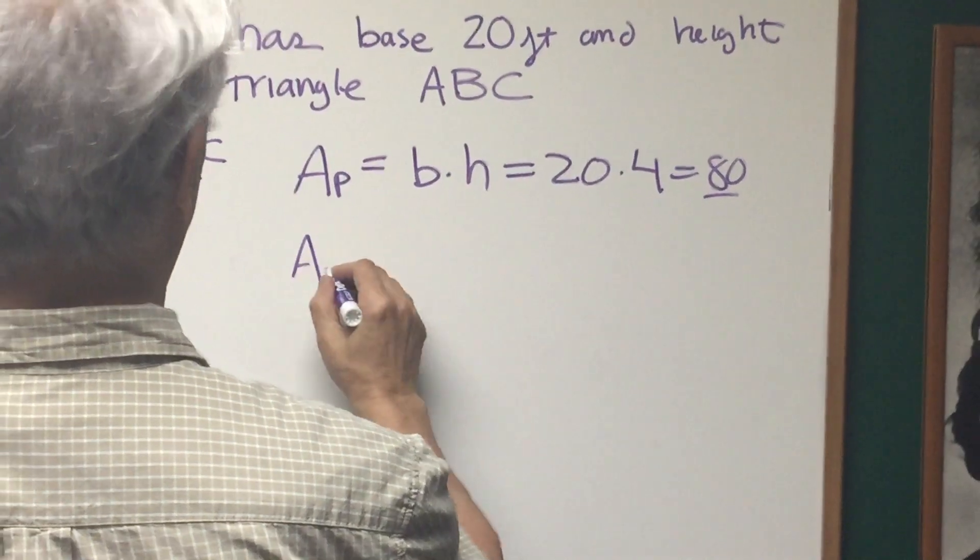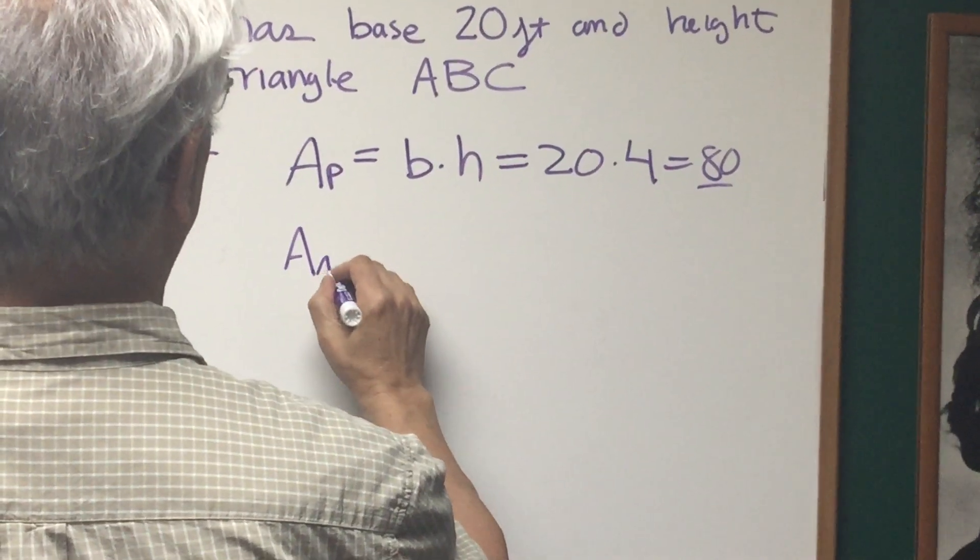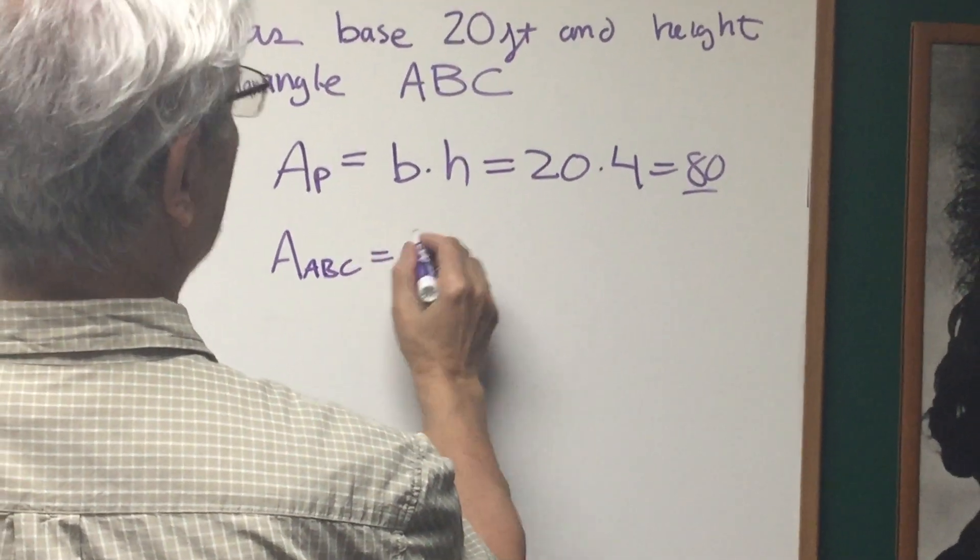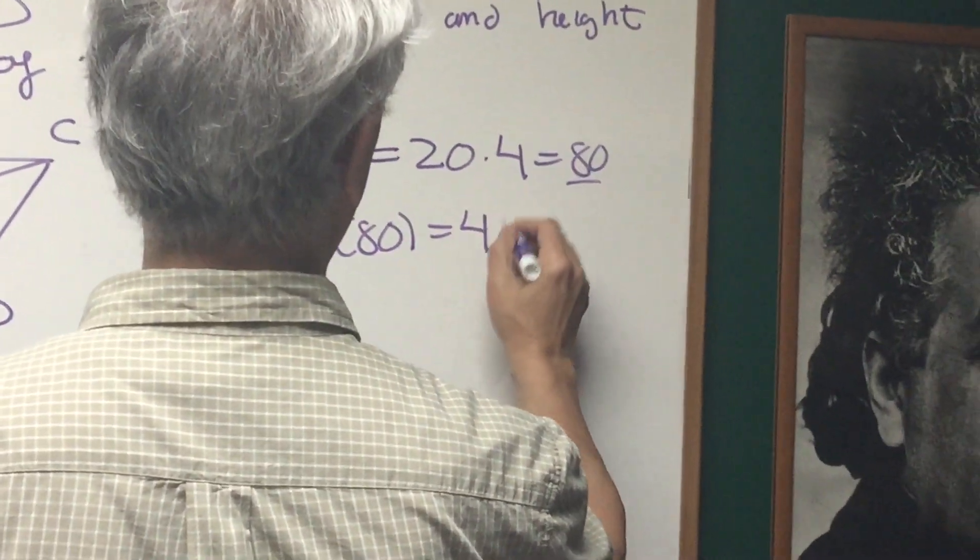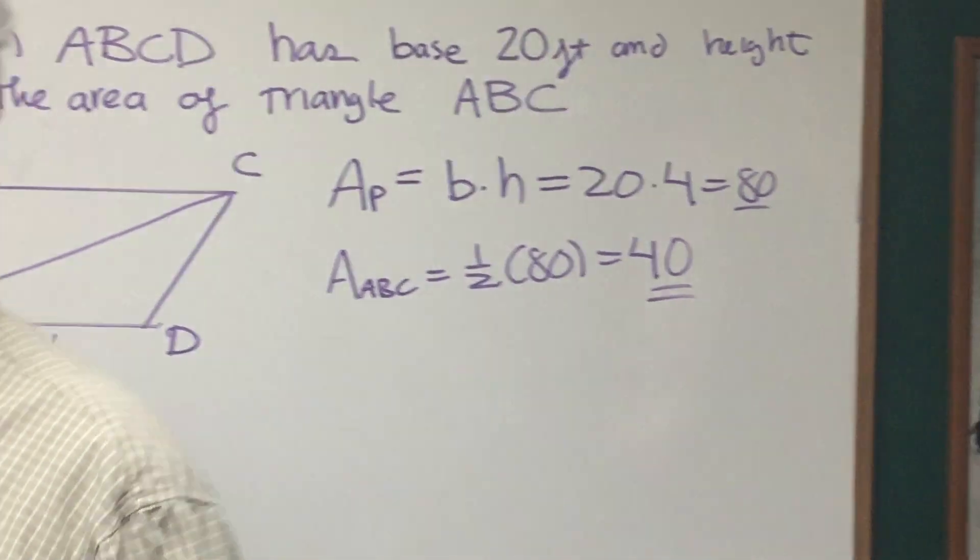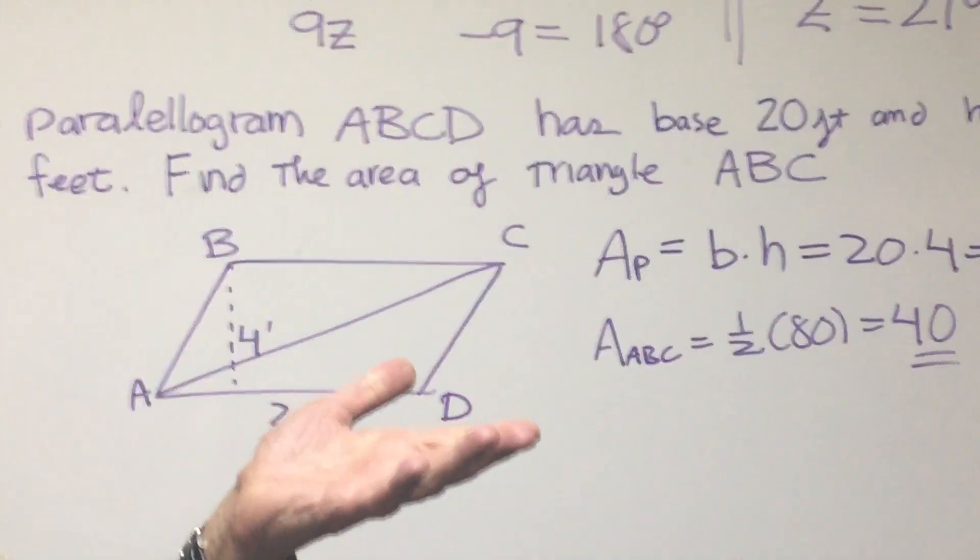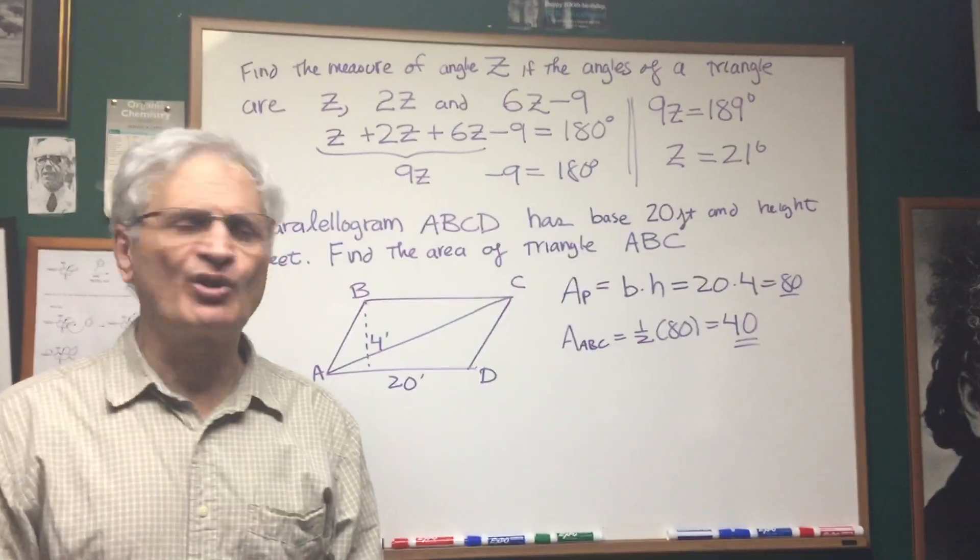And therefore the area of triangle ABCD is just going to be exactly half that, half of 80, and that's going to be 40, whatever the units are. So that's very straightforward stuff, but it includes some good formulas.